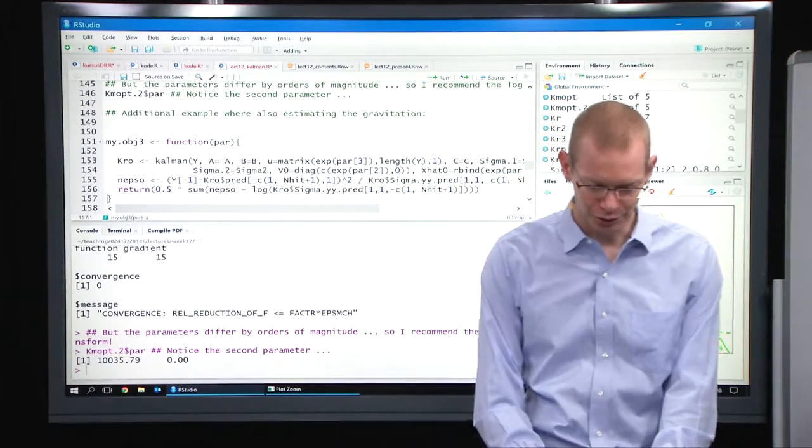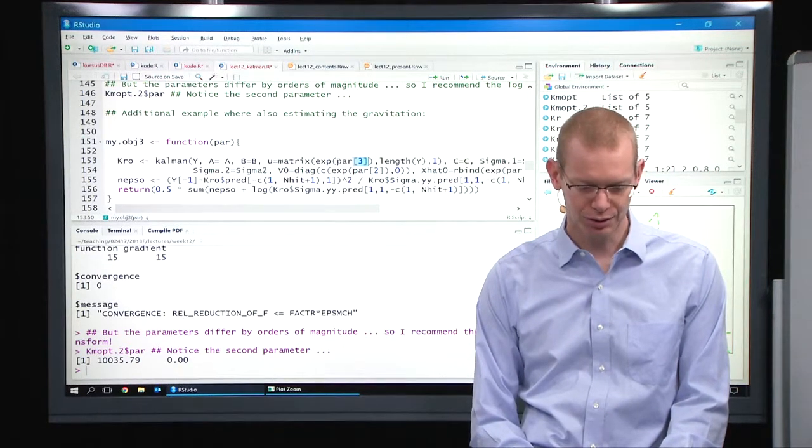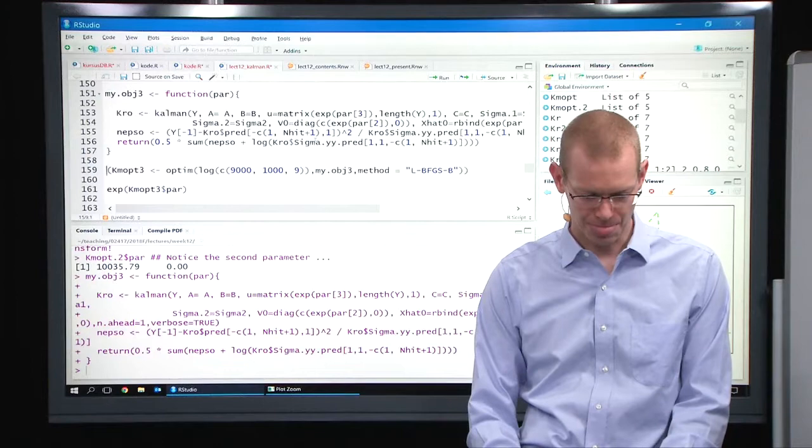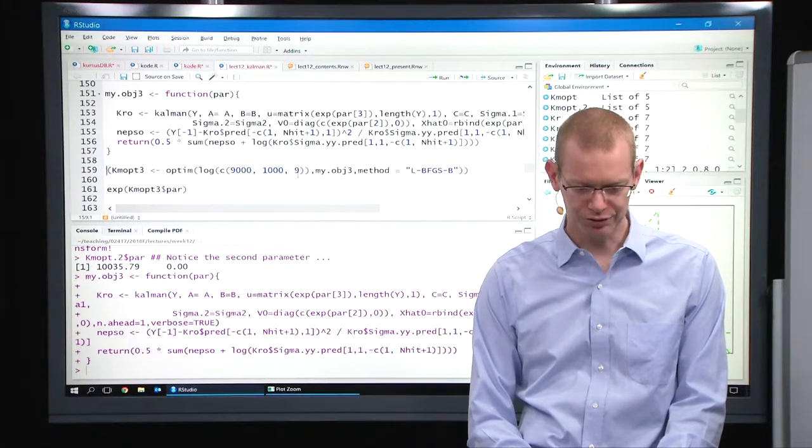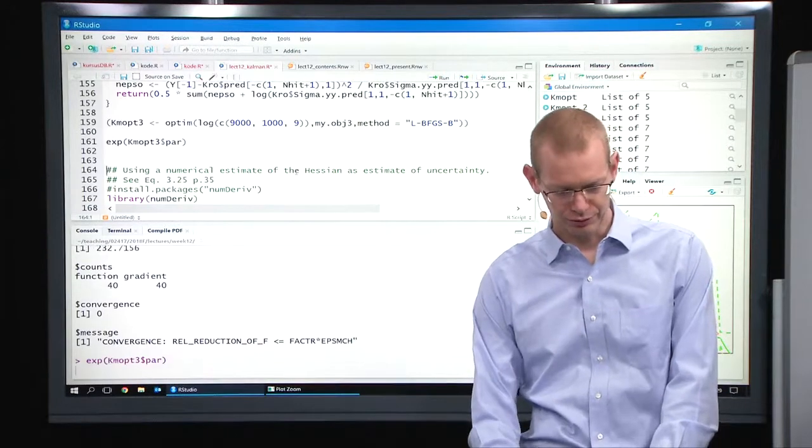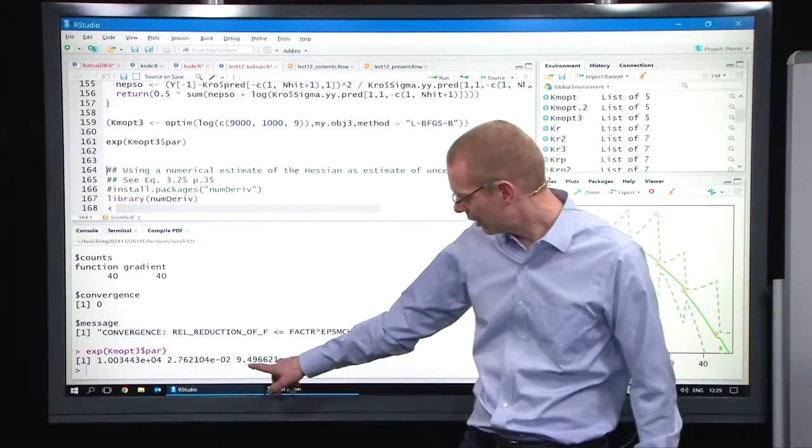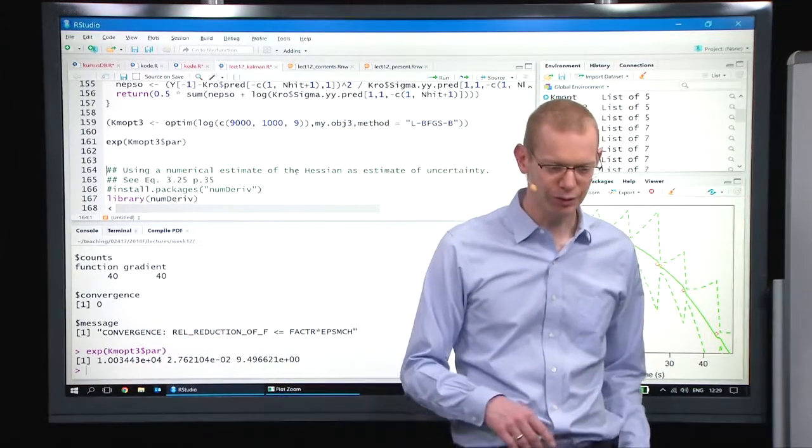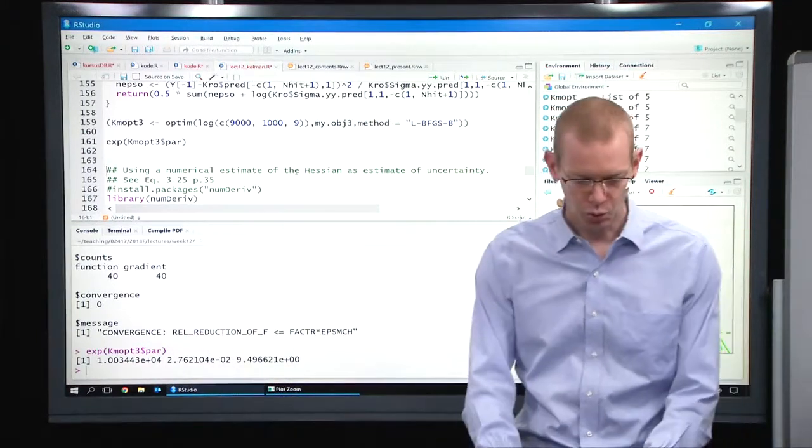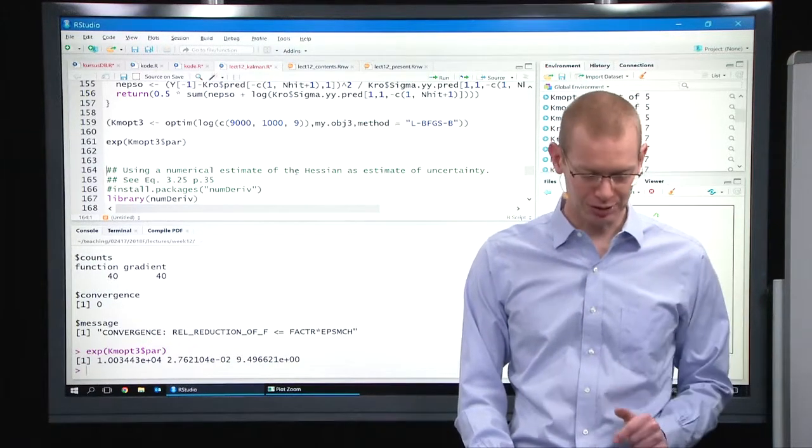We can also add a third parameter to estimate what is the gravity up here in the model. And we just start with nine as a reference point. So what we get here is an estimate of 9.5, and the others are pretty much the same as before.